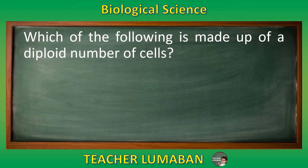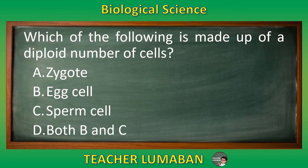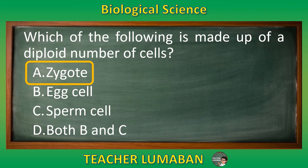Which of the following is made up of a diploid number of cells? Letter A: zygote. Letter B: egg cell. Letter C: sperm cell. Letter D: both B and C. The correct answer is letter A, zygote. A zygote is made up of a diploid number of cells.